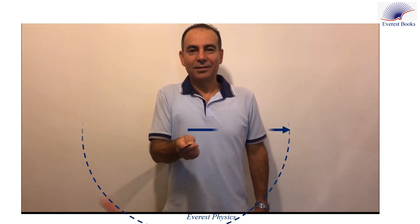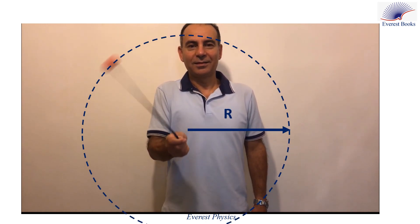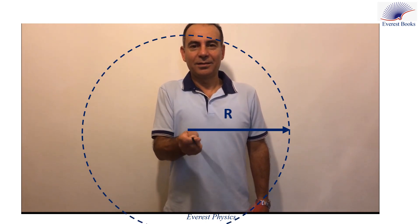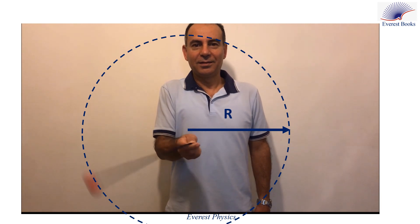In this animation, a particle moves on a circular path. In circular motion, the trajectory is a circle of radius r.